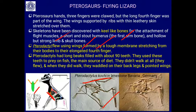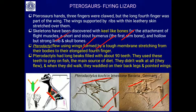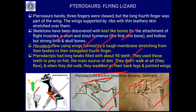One famous example recovered in the limestone of Bavaria, Germany, is Pterodactylus kochi. This actual fossil has been drawn and shows wings with tough membranes stretching from the body and an elongated fourth finger. Pterodactyls had long beaks filled with about 90 teeth, used to prey on fish — their main diet. They didn't walk much; when they did, they waddled on their back legs with their pointed wings.